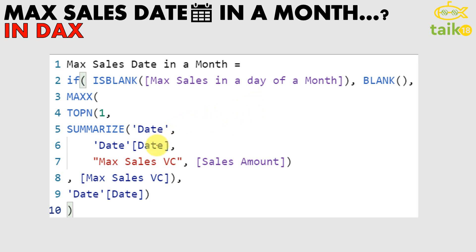Even though this is only 10 lines of DAX code, if you want to understand DAX you need to go deep inside it. Here, we need to identify the innermost DAX function. In our case, SUMMARIZE is the last — meaning innermost — DAX function being used, and it ends at this line.